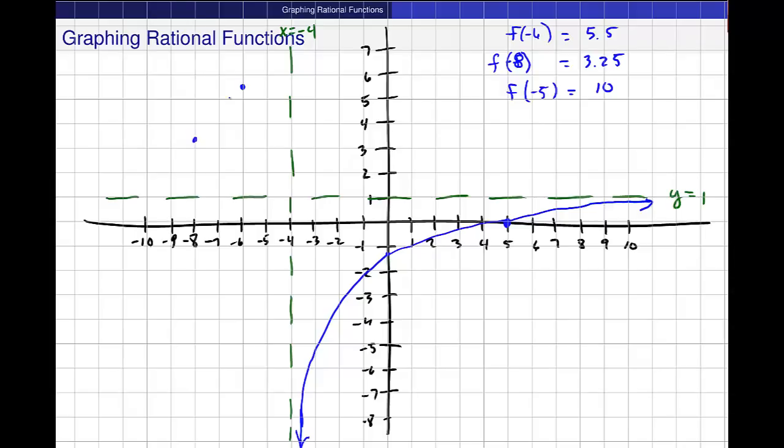And then again, here this should be going up towards infinity along this line. It's going to hit this point. It's going to hit this point. And out here as it goes out towards infinity, it's going to shadow that line y = 1. Okay?